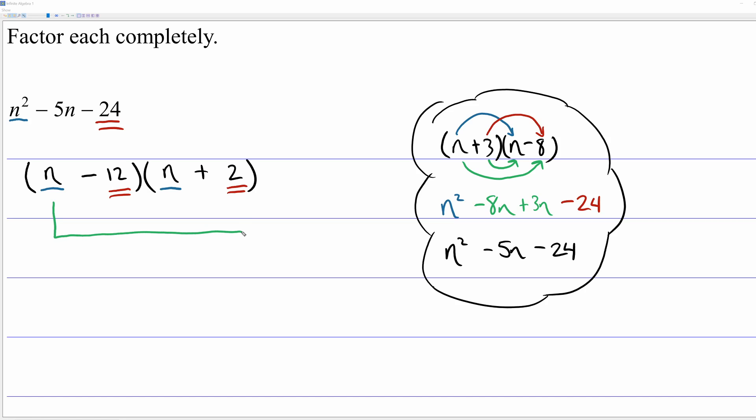In my supposed answer, I have this outside arrow and this inside arrow. If I multiply these out, on the outside I have n times 2, which is 2n. In my inside arrow, I have negative 12 times n, which is negative 12n.